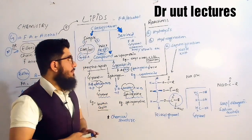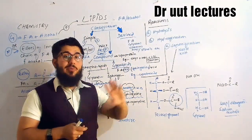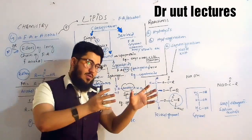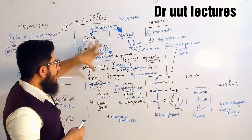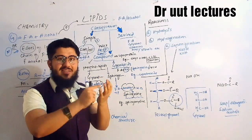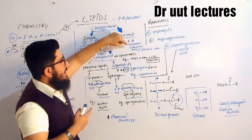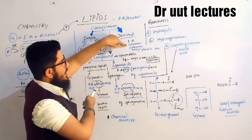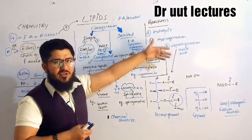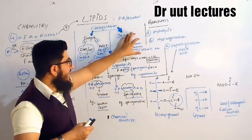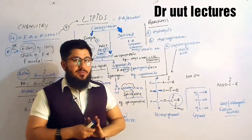Moving towards the next classification: derived lipids. 'Derived' means it is taken from something — derived lipids are actually obtained from simple and compound lipids. When you break simple or compound lipids, you get derived lipids. For example, fatty acid is a derived lipid, glycerol (the alcohol) is also a derived lipid, as are fat-soluble vitamins A, D, E, and K, acyl groups, and sterols. These are all derived lipids obtained by breaking simple and compound lipids.